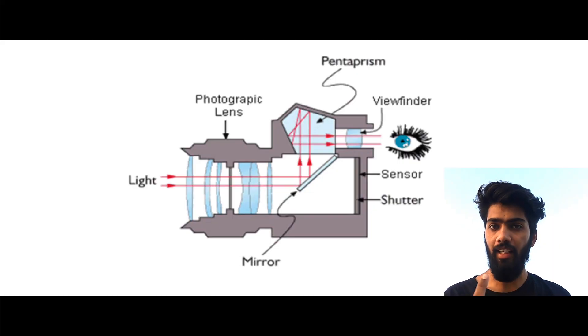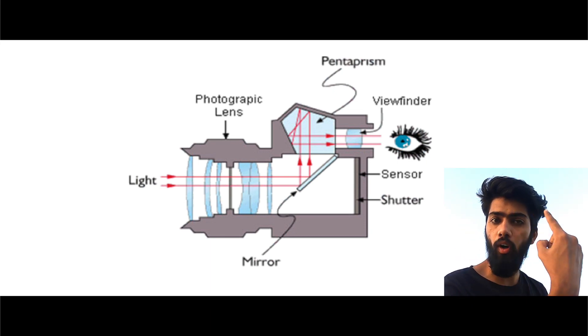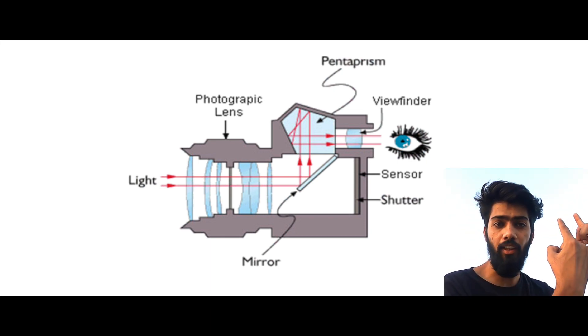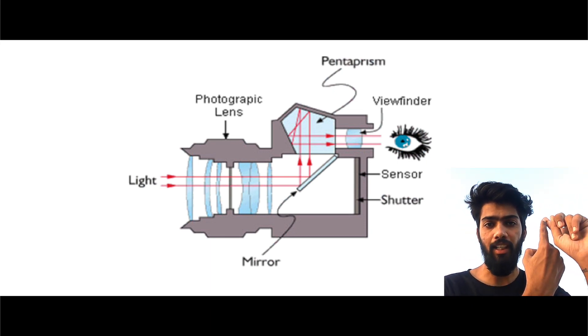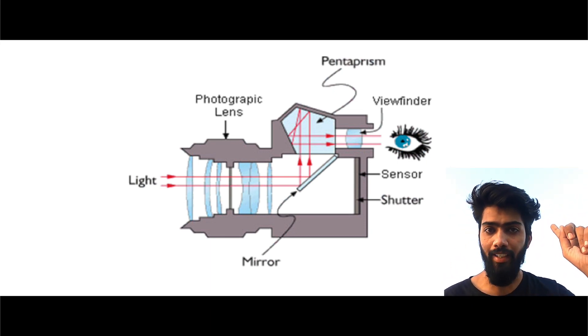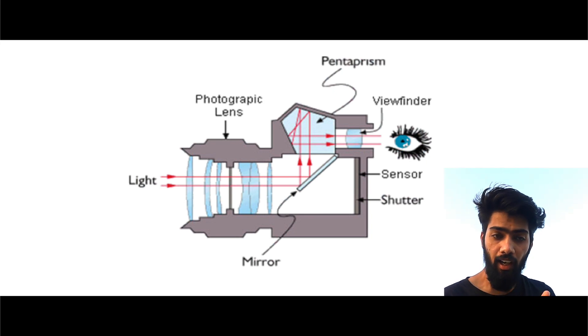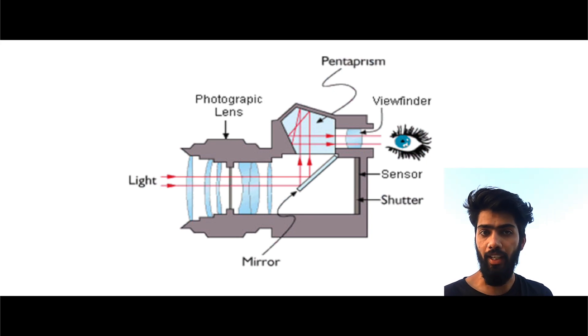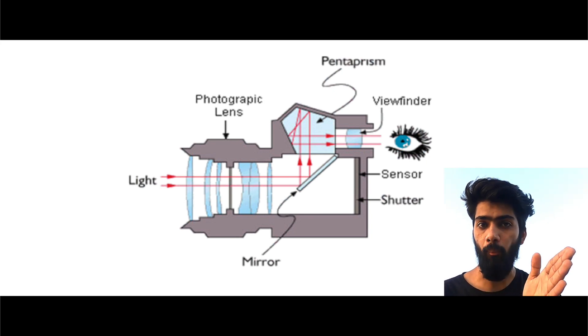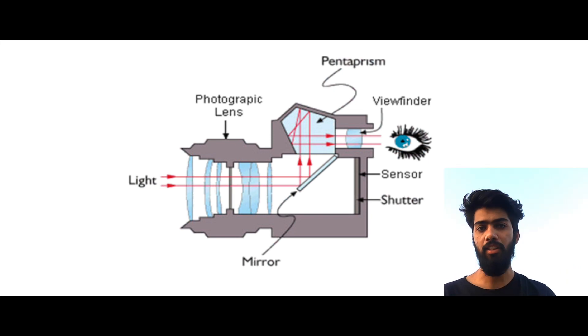So those are the 5 components. The light path goes: first the lens, then mirror 1, then mirror 2, going up to the viewfinder. The other portion of the light that goes straight through mirror 1 reaches the shutter, which you can open according to how long you want light to hit the sensor. Stay connected for many more videos.